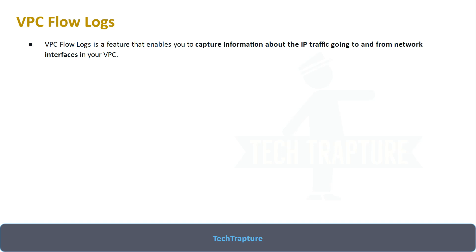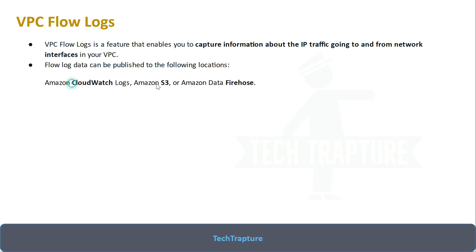For all these details, we need a VPC flow log enabled for our VPC. Flow log data can be published to a few locations - we can send our flow log data either to CloudWatch, Amazon S3 bucket, or Amazon Data Firehose. These are the three destinations currently available. The most common option is CloudWatch Logs, where we can see our flow logs and troubleshoot networking-related issues.